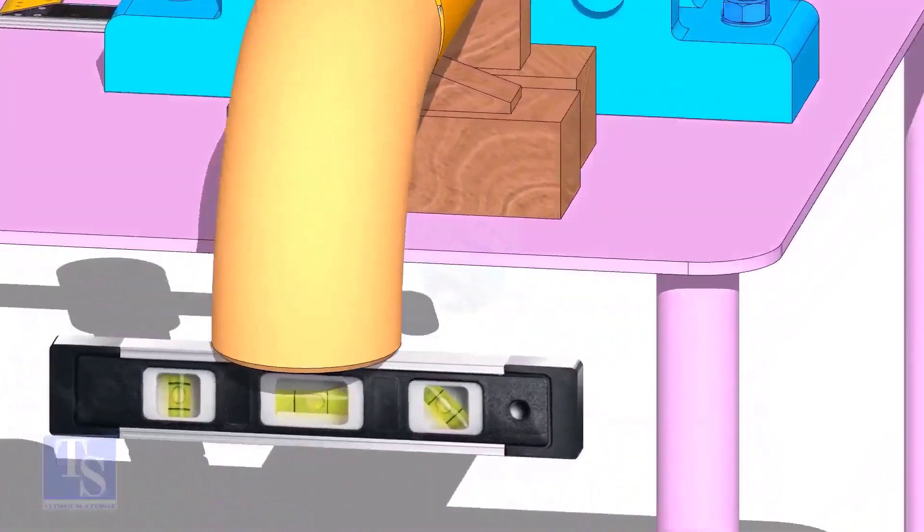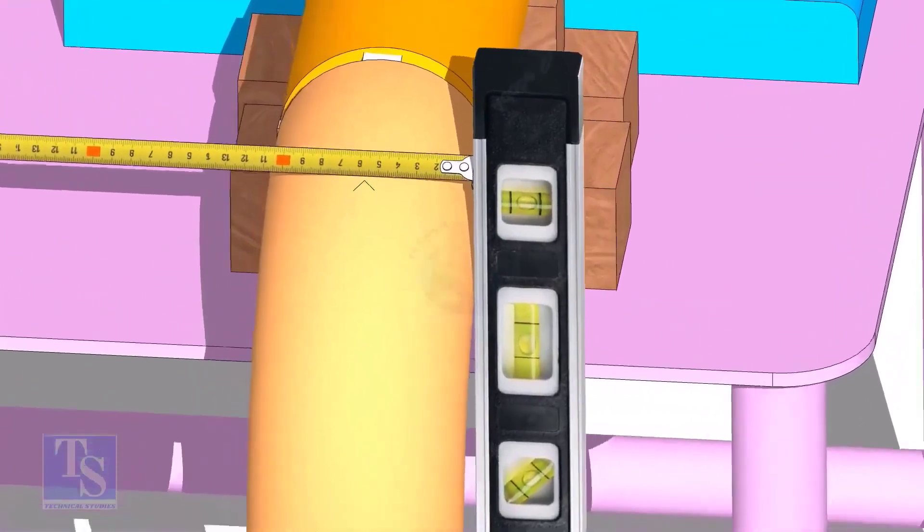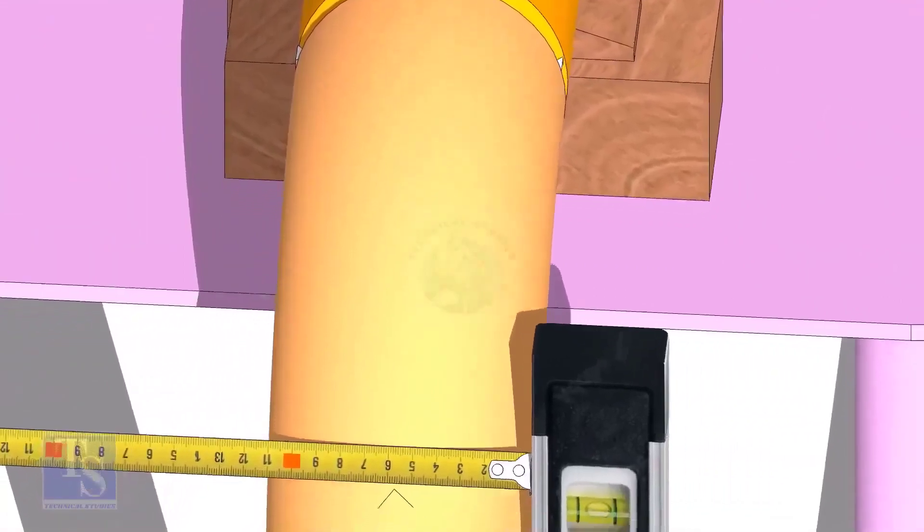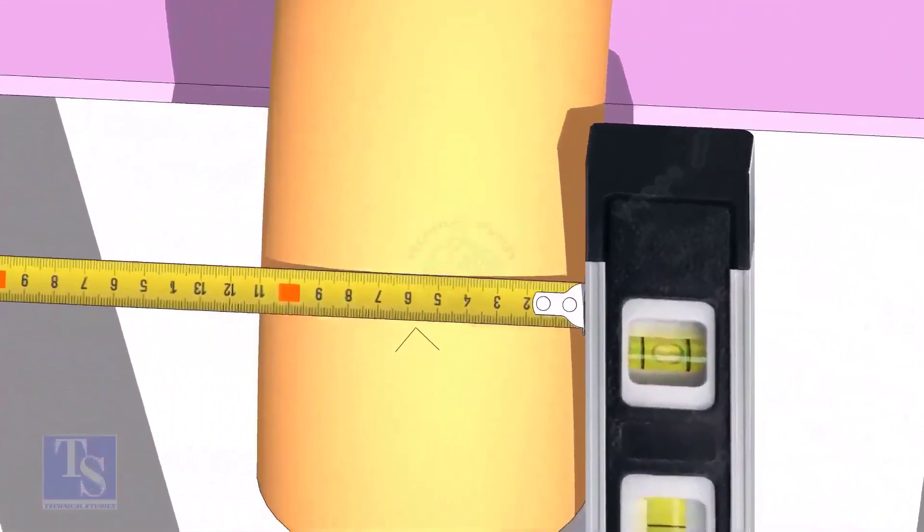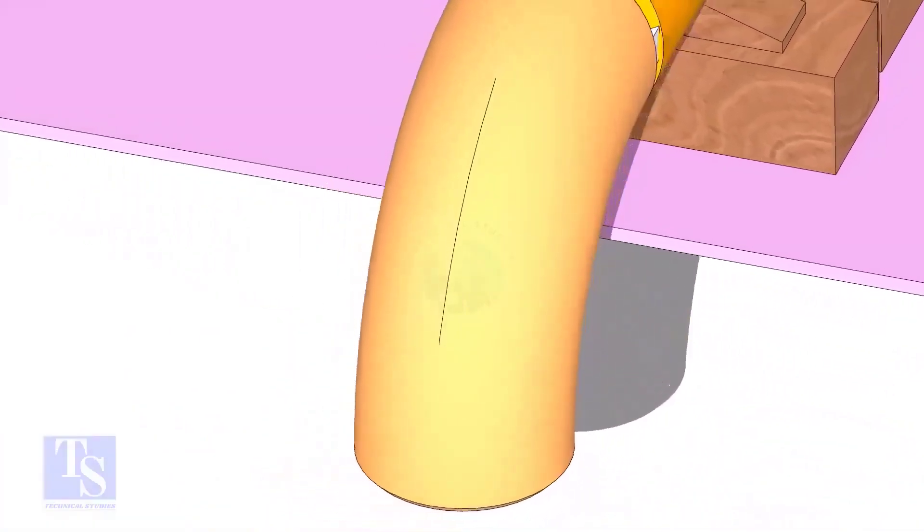Mark the center line of the elbow. OD of a 4 inch pipe is 114mm. Hold a level bottle at the side of the elbow vertically, and mark 57mm on the elbow at least three locations as shown. Draw a line connecting these marks.